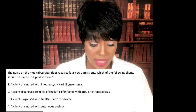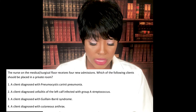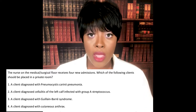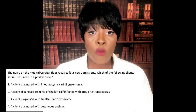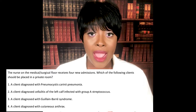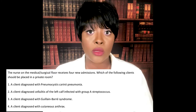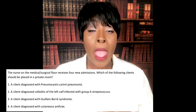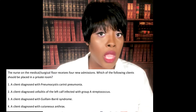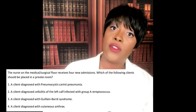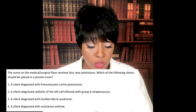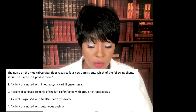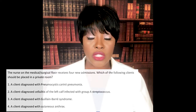The correct answer is two — the client diagnosed with cellulitis of the left calf infected with group A strep. This client needs to be on contact precautions for at least the first 24 hours on antibiotics targeting gram-positive bacteria. The other choices — pneumonia, Guillain-Barré, and anthrax — we use standard precautions with those patients.